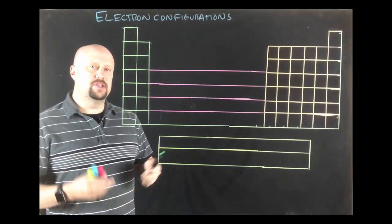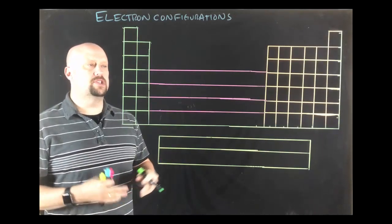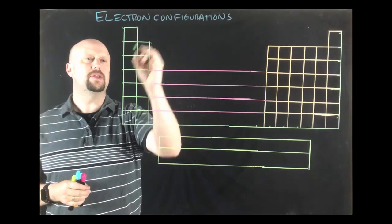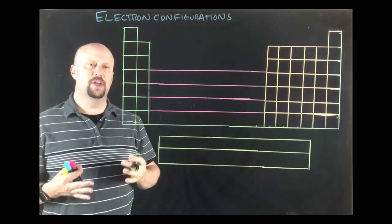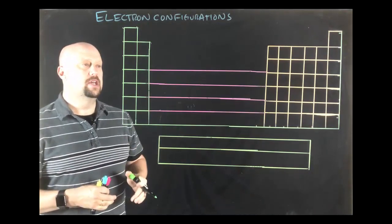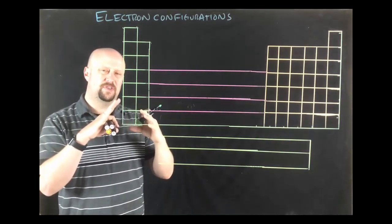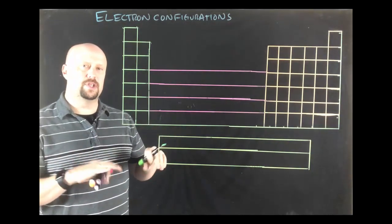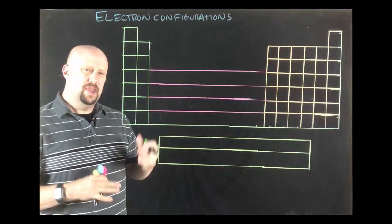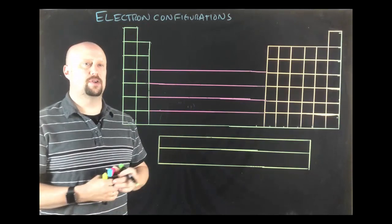So before we dive directly into the rules for electron configurations, I want to talk a little bit about the periodic table and how it relates. So I'm going to label each of these. If you remember in our last video, we talked about different types of orbitals. So we said that we had S orbitals that look like a sphere, and we had P orbitals that look sort of like an infinity sign or sort of like a little dumbbell structure. And then we had D and F orbitals and they really started to look really weird.